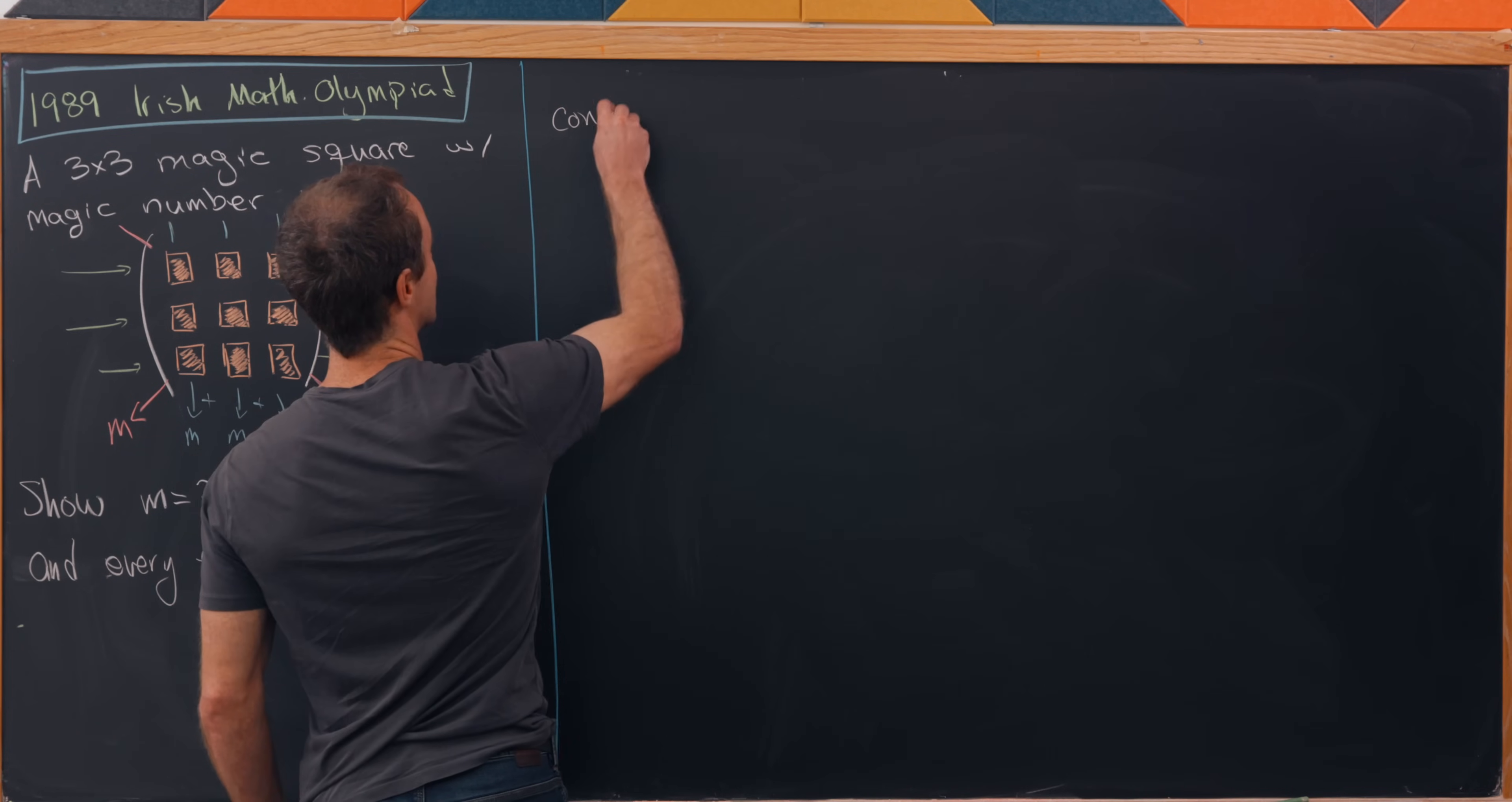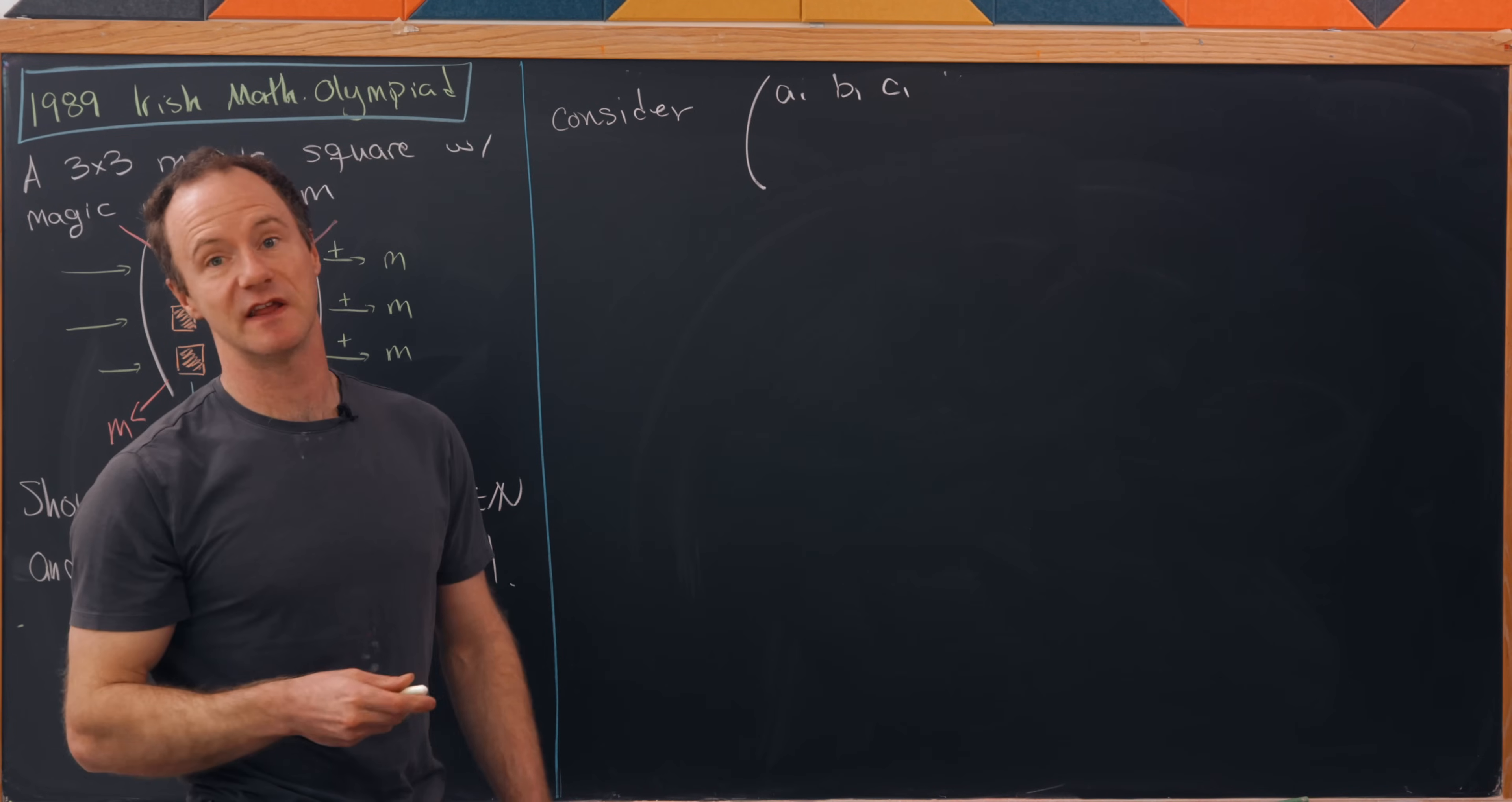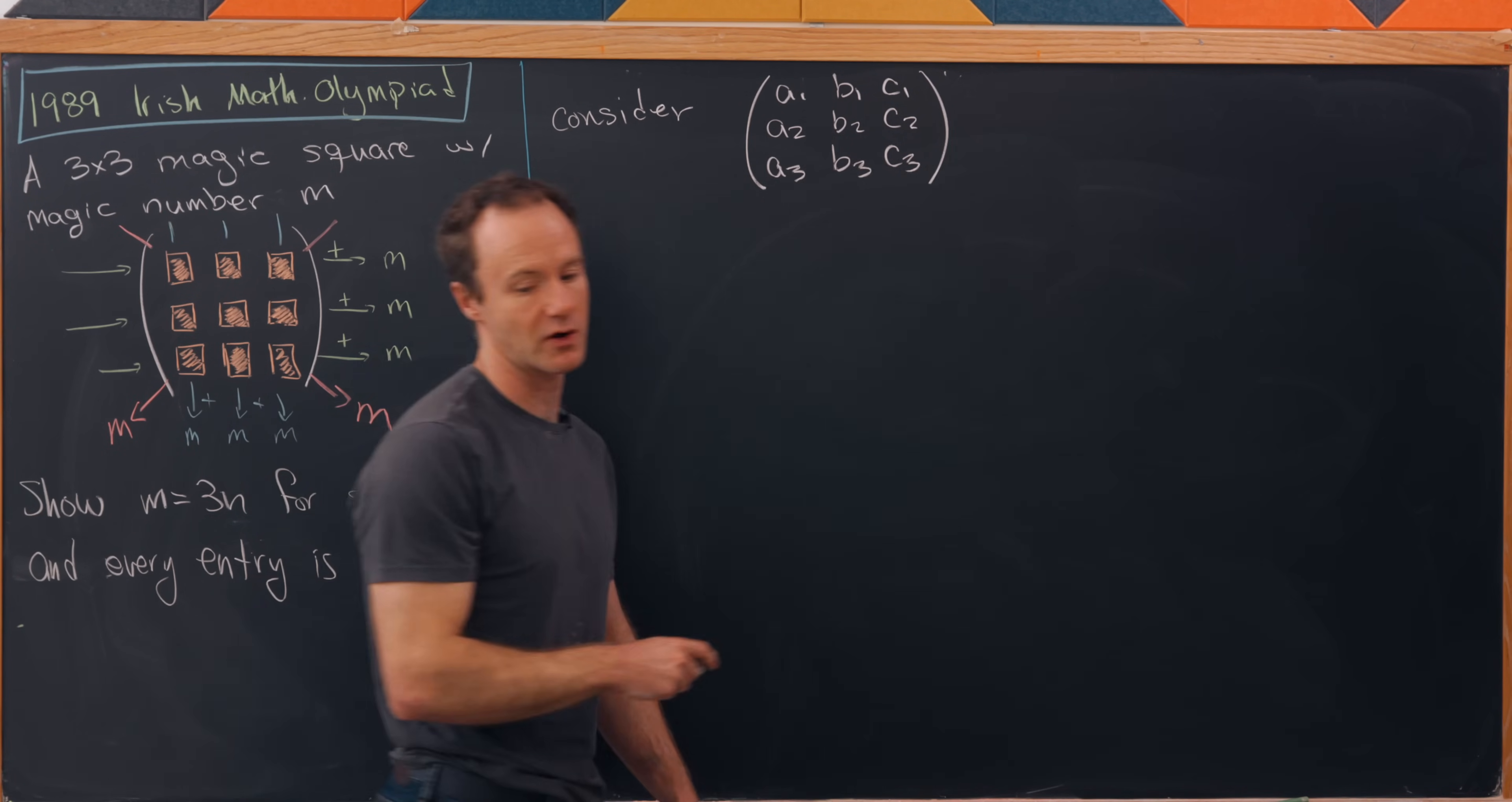Let's consider the following 3 by 3 magic square. I'm going to label the entries as a1, b1, and c1 in the first row, a2, b2, c2 in the second row, and then a3, b3, and c3 in the third row.